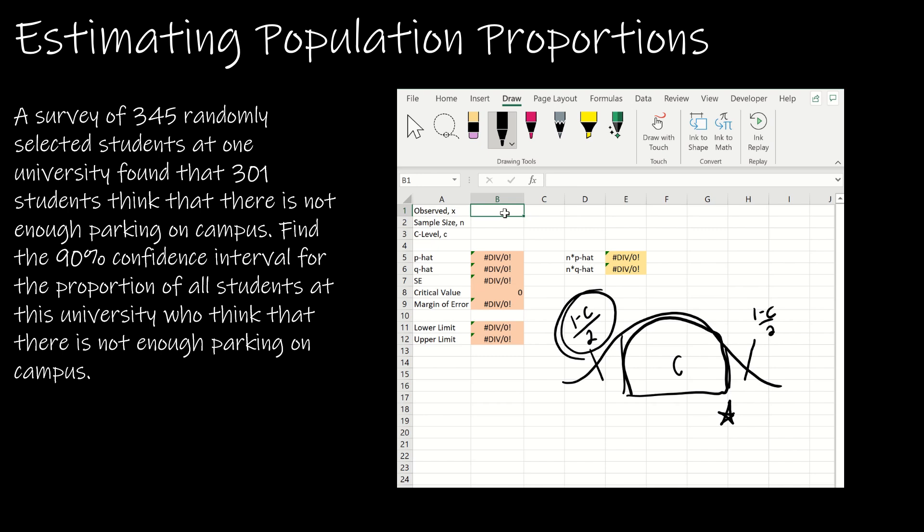Now that we've taken us through all of the cells, let's go ahead and plug in numbers. 301 out of 345 with a confidence level of 0.9.